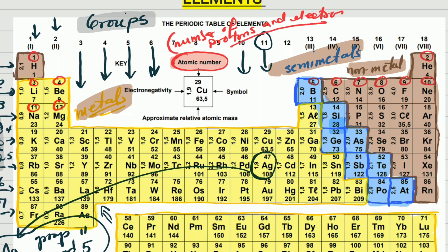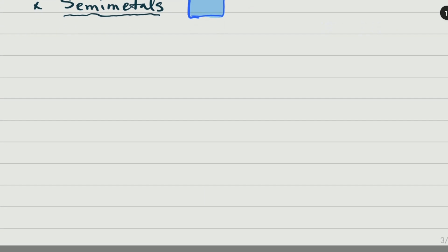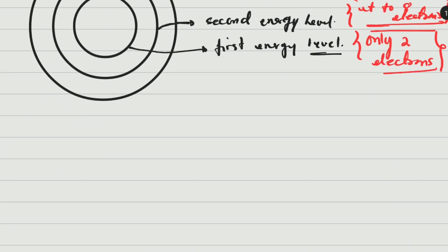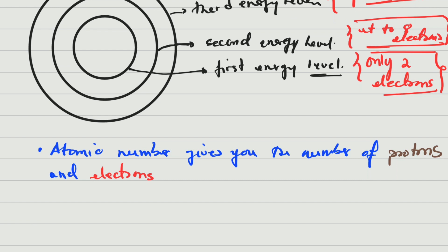The atomic number gives you the number of protons and electrons — that is very, very important. So if we go to hydrogen, for instance, it has number one, therefore it has one proton and one electron. Helium has number two, so it has two protons and two electrons. Lithium has three, beryllium has four, and so on up until the end. You will be able to draw up until potassium or perhaps calcium — you don't have to draw more because then it gets a little more complicated.